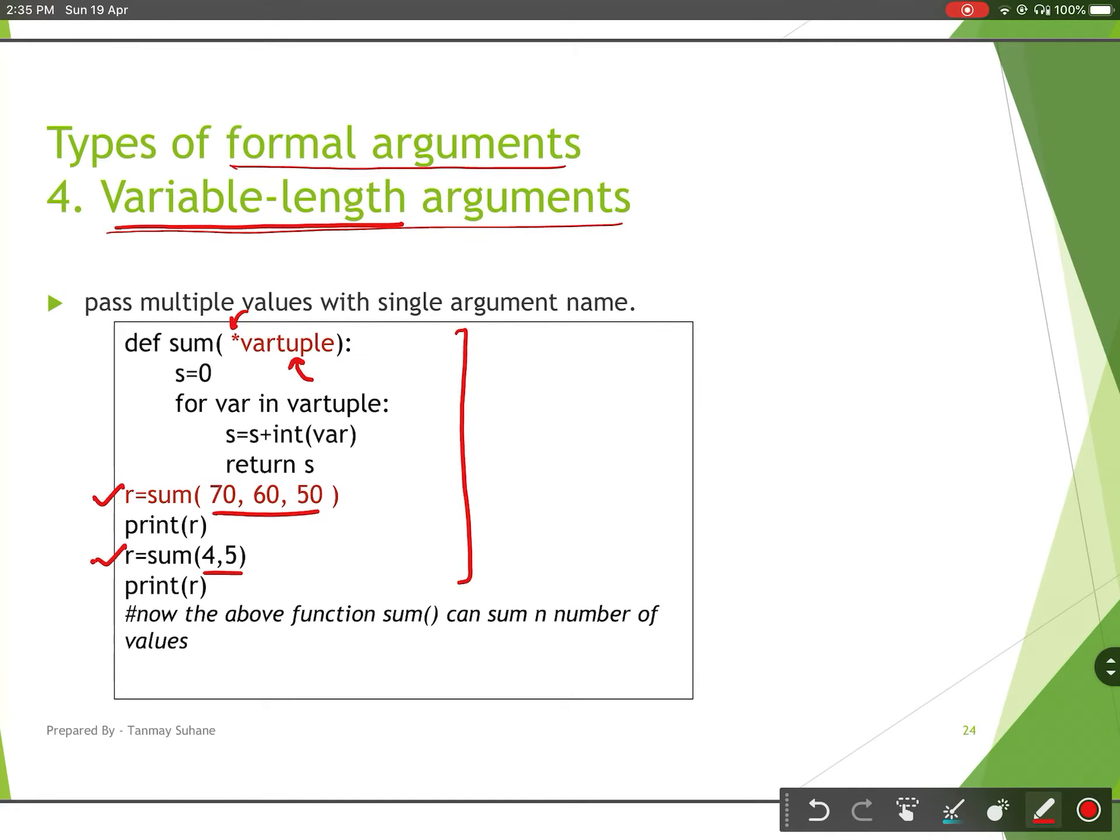So for both cases, my variable length argument vartuple will receive those arguments, and then I can extract each argument one by one using a for loop. I can perform my operation and then return my result.